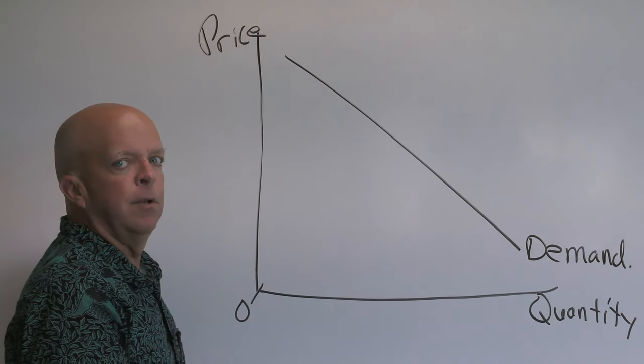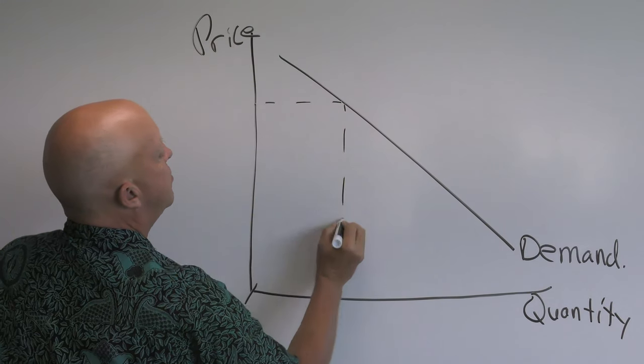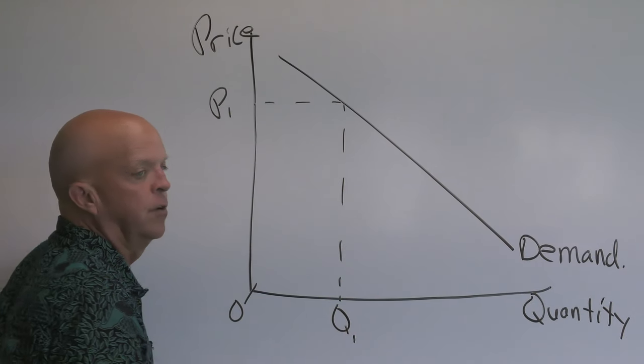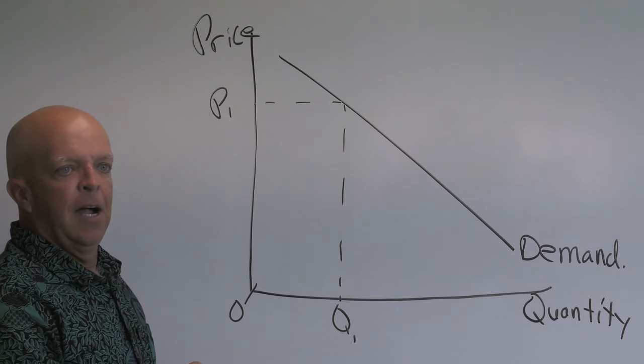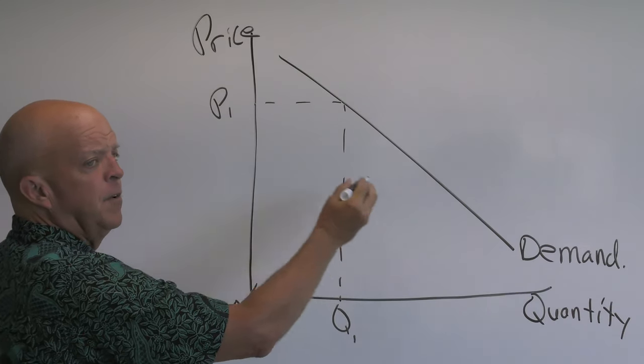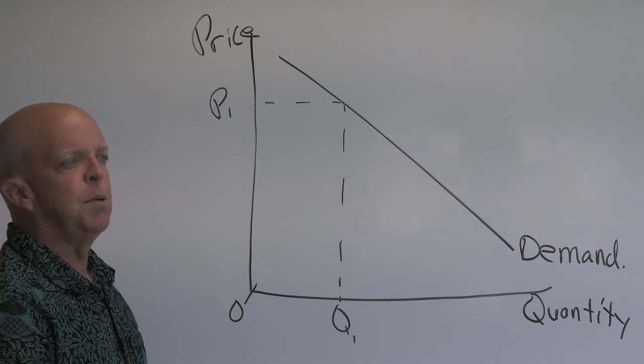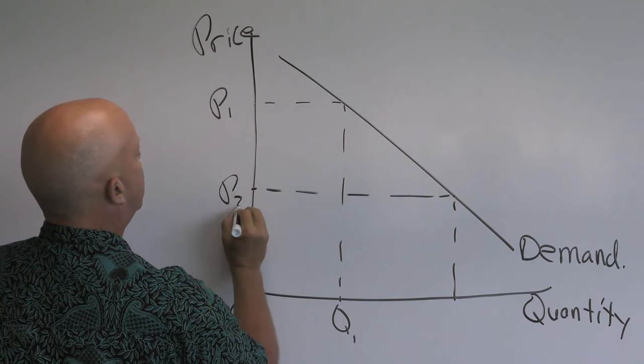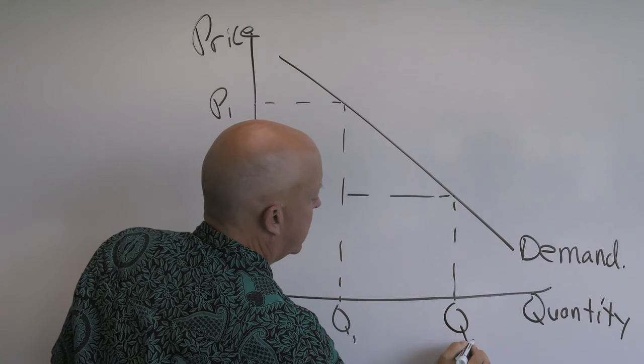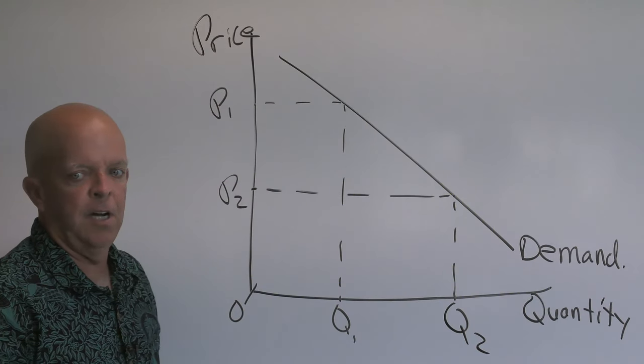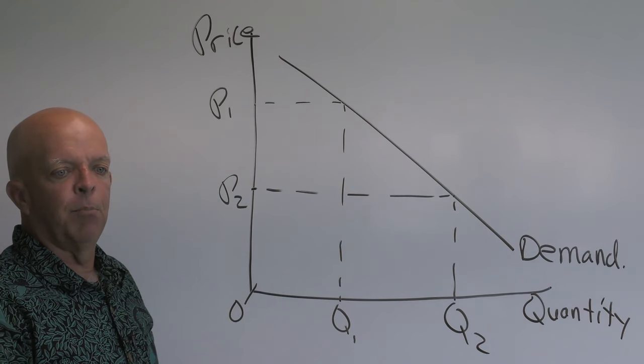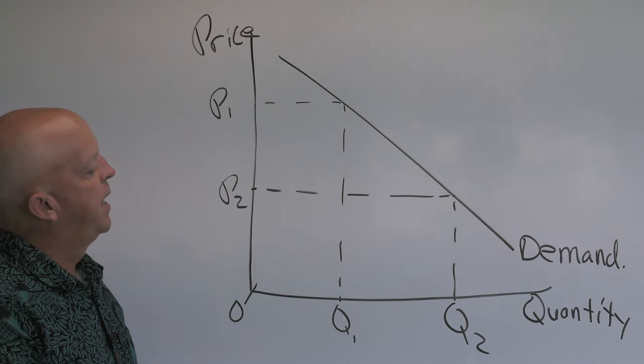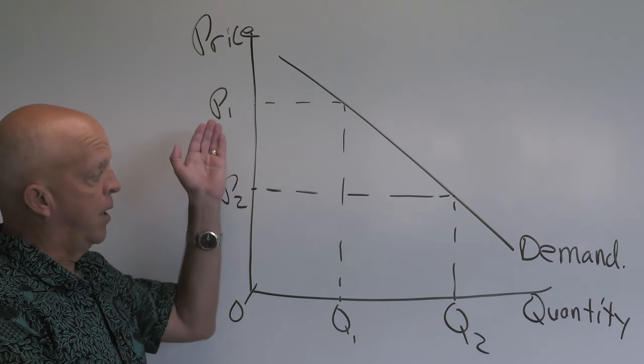And it relates the price of an item with how much is going to be purchased. And the demand curve is drawn what we call downward sloping because as the price goes down, the quantity goes up. And it's a relationship of the price to the quantity. It's a downward sloping relationship, and you need to be able to draw this curve.